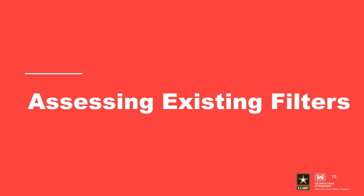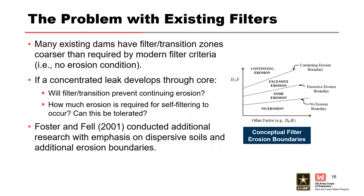Now that we've covered an overview of continuation, we move on to a discussion of how to assess existing filters. Many existing dams have filter or transition zones that are coarser than required by modern filter criteria. Foster and Fell in 2001 conducted additional research with an emphasis on dispersive soils and additional erosion boundaries to help answer questions about whether a filter or transition zone will prevent continuing erosion, how much erosion is required for self-filtering to occur, and whether that amount of erosion can be tolerated.